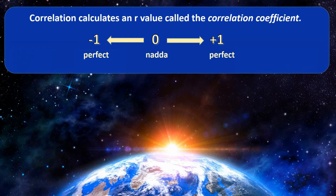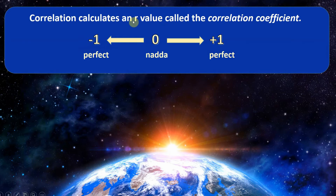Since this is only an introduction to correlation, we're going to stick to two-variable, or simple, correlation examples. When we run a correlation, we calculate what is called the correlation coefficient, expressed as an r value. You'll see 'r equals' and then some number. R can take on any value between negative one and positive one.